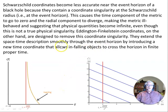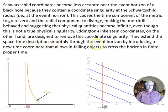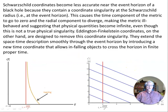Eddington-Finkelstein coordinates, on the other hand, are designed to remove this coordinate singularity, as you can see in the plot here. They extend the space-time description smoothly through the event horizon by introducing a new time coordinate that allows infalling objects to cross the event horizon in finite proper time. You can see the difference in the plot.